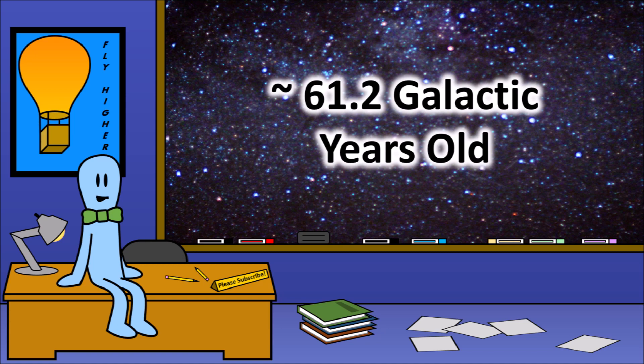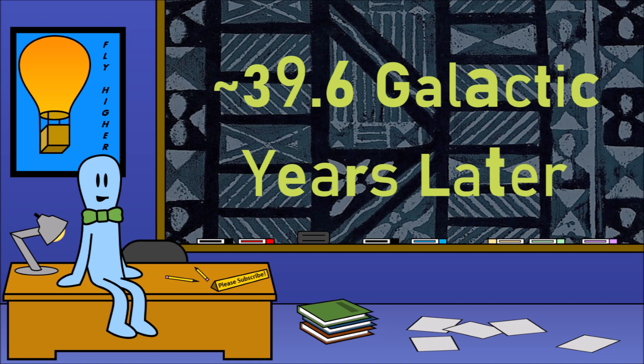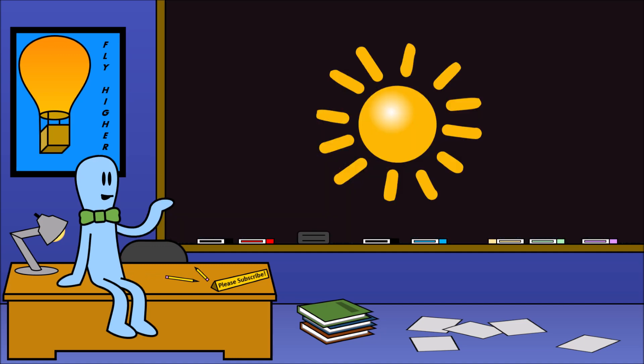After the creation of the universe, it took a little over one galactic year for the Milky Way to form. After the Milky Way, it took 39.6 galactic years for our sun to form.